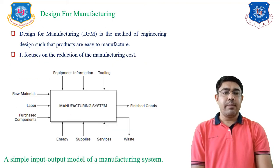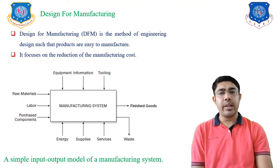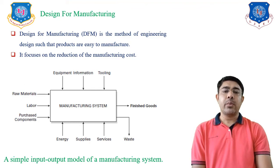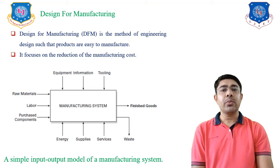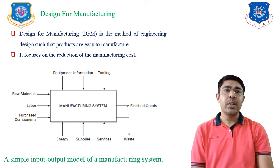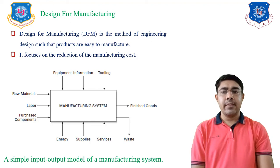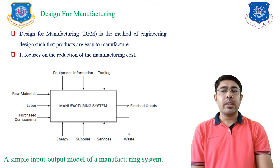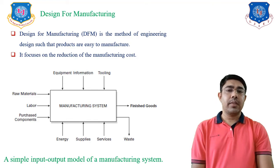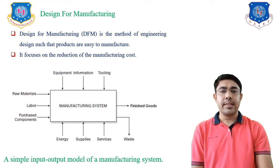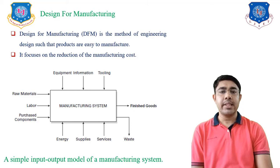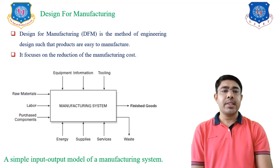Design for Manufacturing is the method of engineering design such that products are easy to manufacture. When developing any products using Design for Manufacturing, we keep in mind that the product or component is manufactured easily. It is also focused on the reduction of manufacturing cost, so when we design any component, the manufacturing cost must be as low as possible.